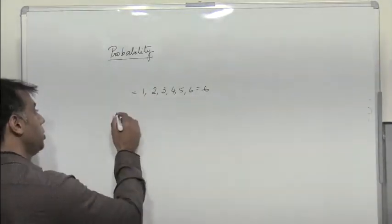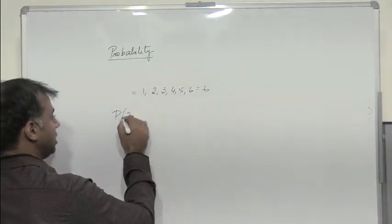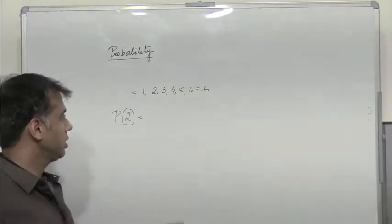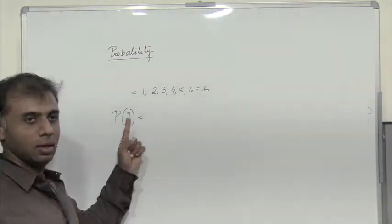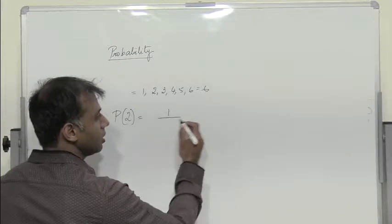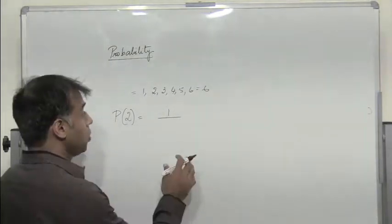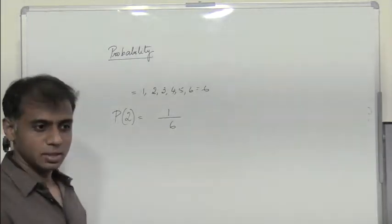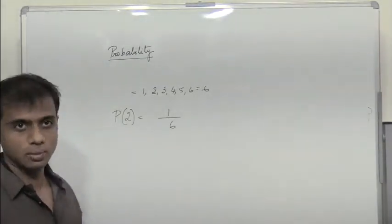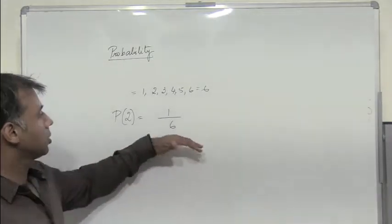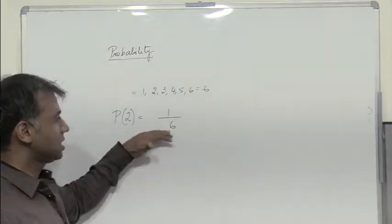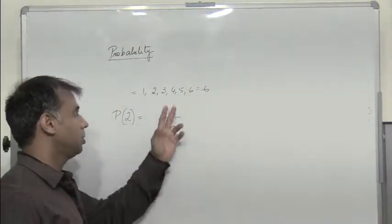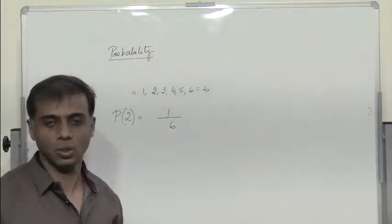But if I want to know what is the probability of me getting, say, a two — the favorable event happening is two — it is one by the total number of possible outcomes, which is six. So if I toss a die and I get two, it is one favorable outcome, whereas the total possible outcomes is six. So one-sixth is my probability of getting two. Similarly, one-sixth would be the probability of getting five, and so on.